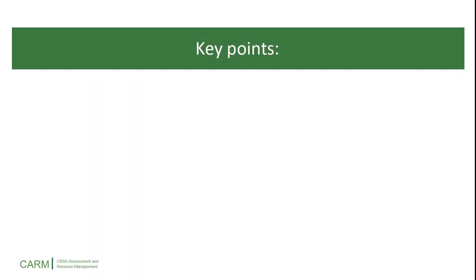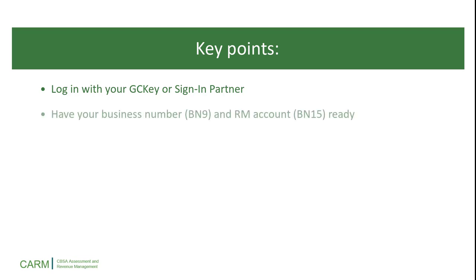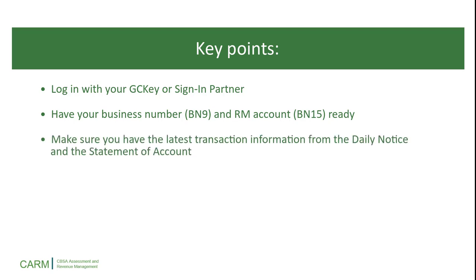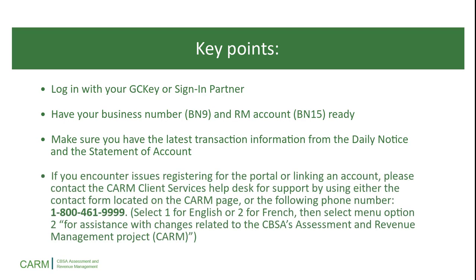Here are some key points to remember about this process. Log in with your GC key or sign-in partner. Have your business number, BN9, and RM account, BN15, ready. Make sure you have the latest transaction information from the daily notice and the statement of account. And finally, if you encounter issues registering for the portal or linking an account, please contact the CARM Client Services Unit for support by using either the contact form link located on the CARM page or the following phone number.